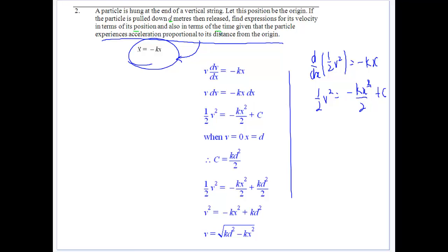So in terms of x, in terms of t, given that the particle experiences acceleration proportional to its distance from the origin. What does that mean? Acceleration is proportional to its distance from the origin. We had our position at the origin, it was pulled down there. So we take acceleration acting in that direction. We'll take it as minus kx, so it's proportional to the position.